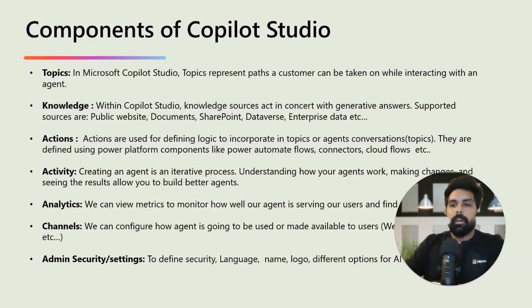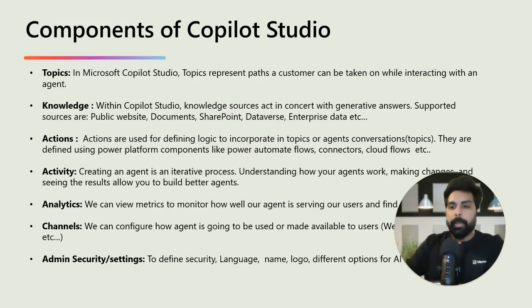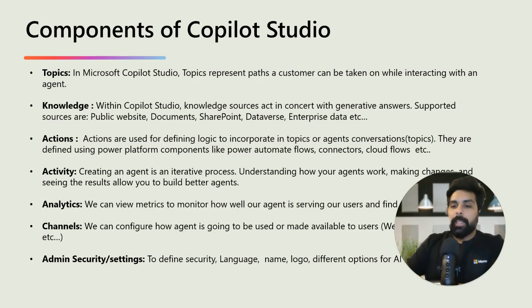Let's talk about the key components that make up the Co-Pilot experience — the building blocks that help your AI assistant understand users, provide answers and even take action. First is topics. Topics structure your conversation. They define the different paths a conversation can take. For example, if a user asks about store hours, the agent triggers the store hours topic and responds with the correct information. Topics have trigger phrases and conversation nodes, which we will discuss in detail in future videos.